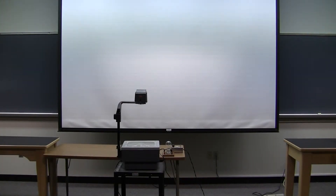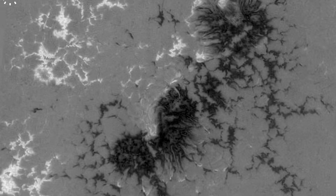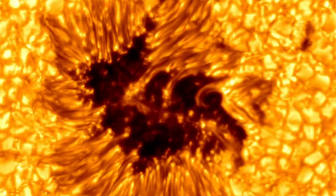This video will focus on a simple demonstration that can be done in the classroom to illustrate that the appearance of sunspots follows naturally from the fact that they are cooler than the surrounding surface of the sun.